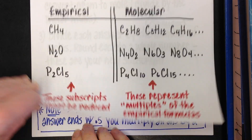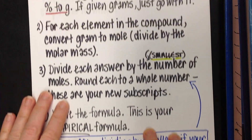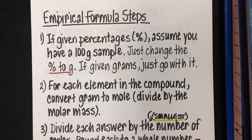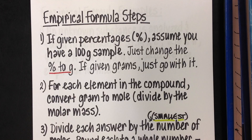Here is some more information on empirical formulas and the basic steps. If you are given percentages, always assume you have a 100-gram sample — that's common in beginning chemistry. Because of that, you literally just change the percent sign to grams; you don't have to do any work there. If they happen to give you grams right from the beginning, just go with it.